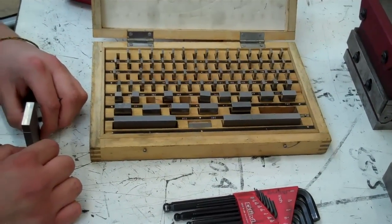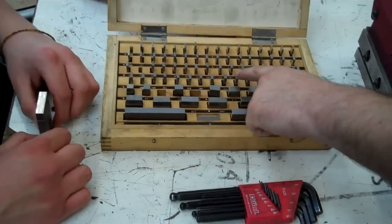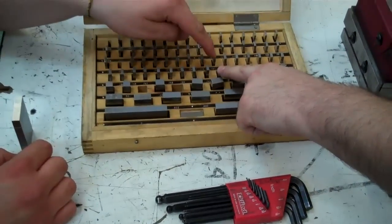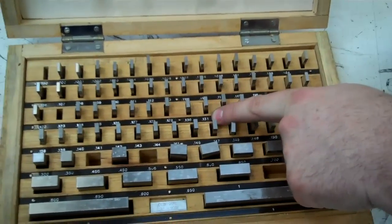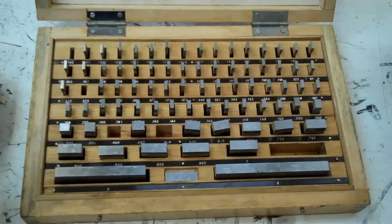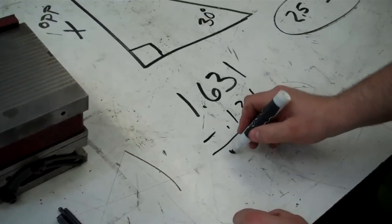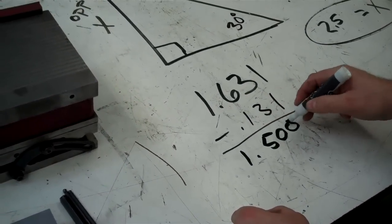Well, we know we have 0.31 here at the end, so if we look through our box, we see that we have 131 right here. We have 0.31. So if I subtracted 131 from what I have here, I end up with 1.500.